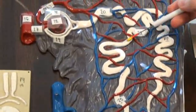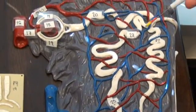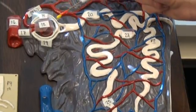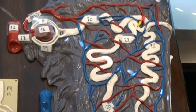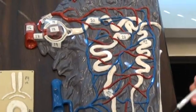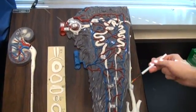And that leads to number 23, which is your distal convoluted tubule. Distal, again, because it's distal or far from the glomerulus. And that reaches your collecting tubule, number 26, your collecting tubule.